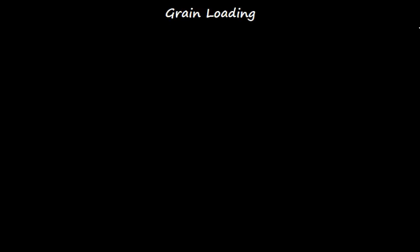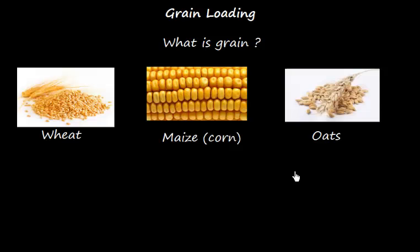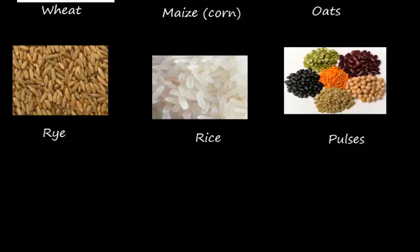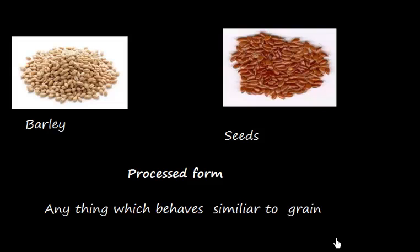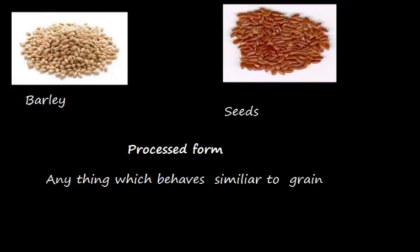Welcome to this video. Here I am going to discuss the basic concepts about grain loading. First of all, let us understand what is grain. The IAMUR code says that grain is wheat, maize, corn, or rye, rice, pulses, barley, seeds, and their processed forms. Basically, anything which behaves similar to grain is called grain.